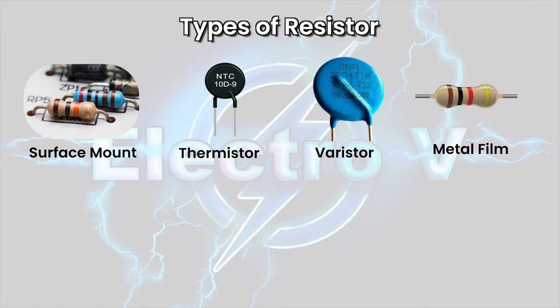Metal film resistor: made by depositing a thin layer of metal onto an insulating substrate. They have a more precise resistance value and are more stable than carbon resistors.